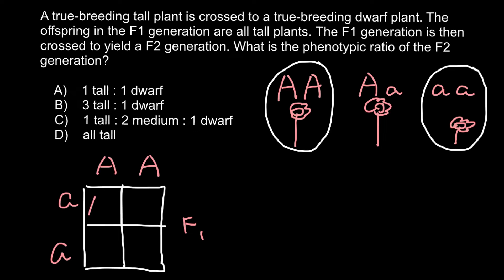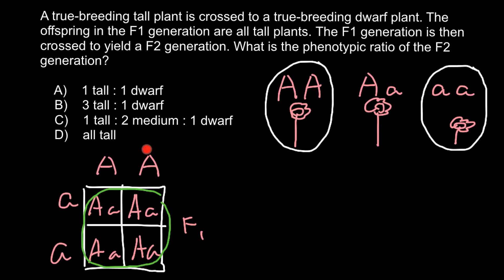The genotypes are going to be as follows: capital A small a for all offspring. So 100% of the F1 generation is going to be heterozygous. Phenotypically they are going to be the same as the homozygous dominant parent, capital A capital A — so the same tall phenotype.